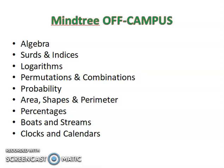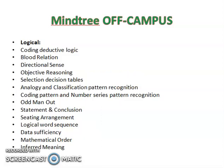In logical reasoning you can expect questions from coding deductive logic, blood relations, directional sense, objective reasoning, selection decision tables, analogy and classification, pattern recognition, coding pattern and number series, odd man out, statement and conclusions, seating arrangements, logic world sequence, data sufficiency, and mathematical order inferred meaning. If you cover all these topics, there is no way you cannot crack the Mphasis off-campus drive.